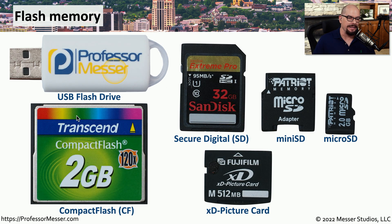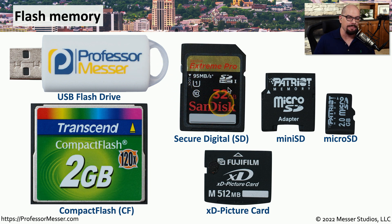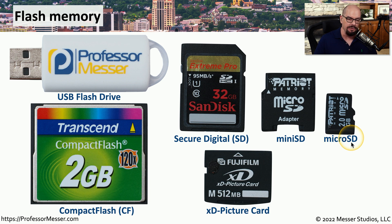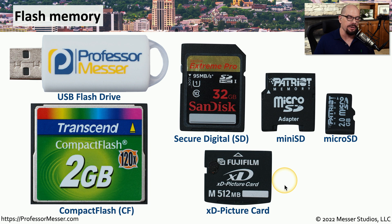Here are some common examples of flash memory. Your USB flash drive is probably the most familiar. If you have a camera or other mobile device, you may be using an SD type of flash memory. If you have a mobile phone or very small device, you might use a micro SD — a very small version of the SD card. For older systems, you may find legacy flash drives such as compact flash or the XD picture card.